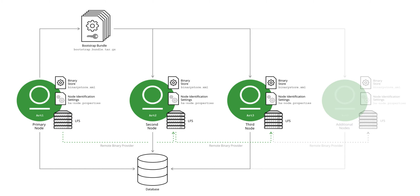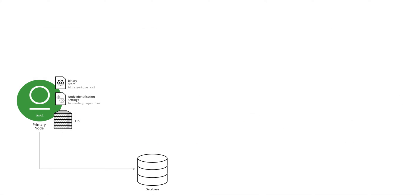Before jumping into the actual setup, let's first take a look at the setup process. The setup process begins by setting up the primary node. We'll define the binary store configuration for the primary node, followed by the node identification setting and its database configuration. Then we'll install Artifactory and place the database driver in the configured settings in the Artifactory home folder.